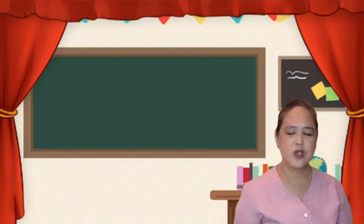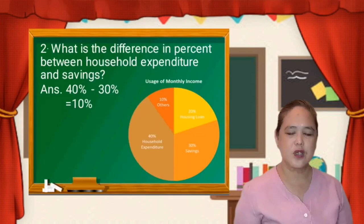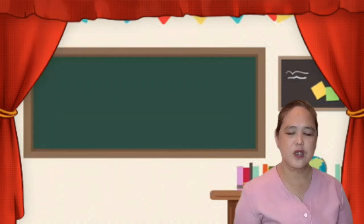For number 2, what is the difference in percent between household expenditure and savings? For household expenditure we have 40% and for savings is 30%. So just subtract the two: 40% minus 30% is equal to 10%. The answer for number 2 is 10%.